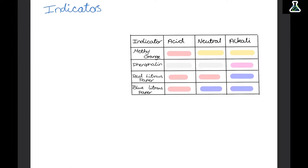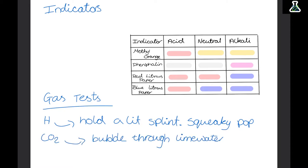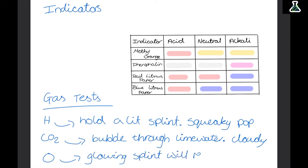We can also test for different gases. To test for hydrogen, hold a lit splint over the sample — if hydrogen is present you'll hear a squeaky pop. To test for carbon dioxide, bubble the gas through lime water — if carbon dioxide is present it will go cloudy. To test for oxygen, hold a glowing splint over it — if oxygen is present it will relight.